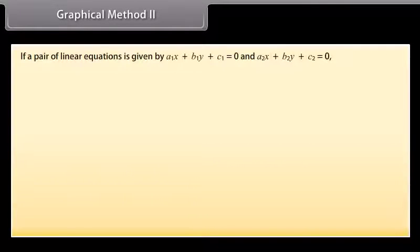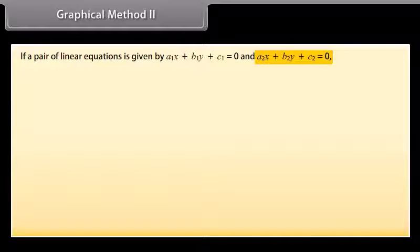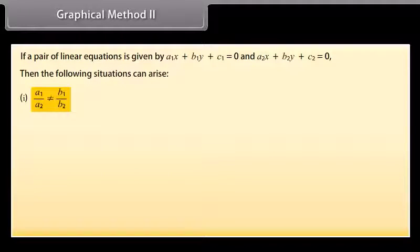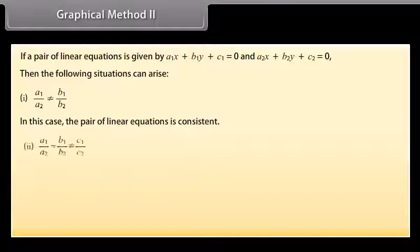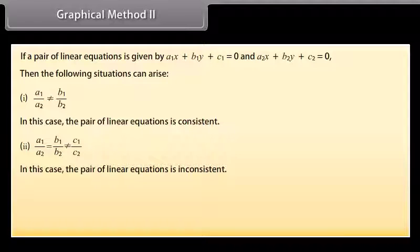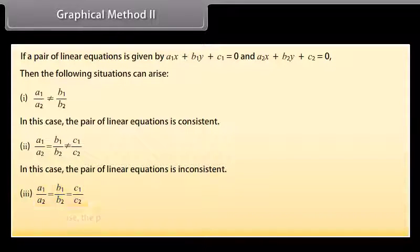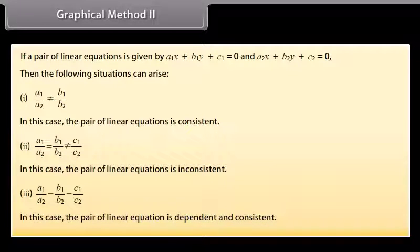If a pair of linear equations is given by a1x + b1y + c1 = 0 and a2x + b2y + c2 = 0, the following situations can arise. 1. If a1/a2 ≠ b1/b2, the pair is consistent. 2. If a1/a2 = b1/b2 ≠ c1/c2, the pair is inconsistent. 3. If a1/a2 = b1/b2 = c1/c2, the pair is dependent and consistent.